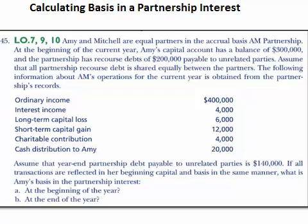The last paragraph says: assume that year-end partnership debt payable to unrelated parties is $140,000. If all transactions are reflected in the beginning capital and basis in the same manner, what is Amy's basis in the partnership? We have to calculate that at the beginning of the year and at the end of the year.